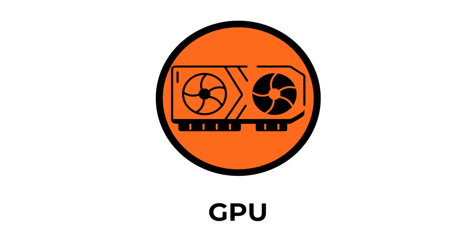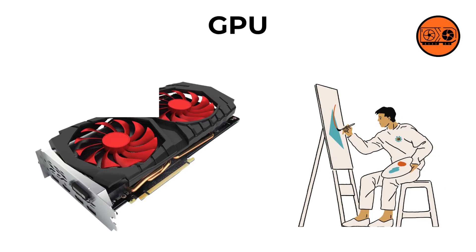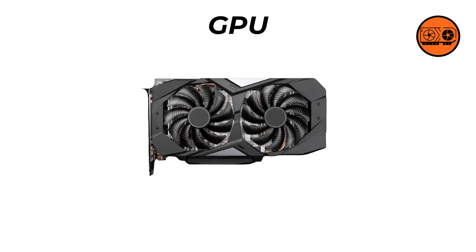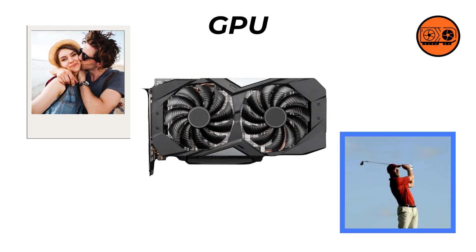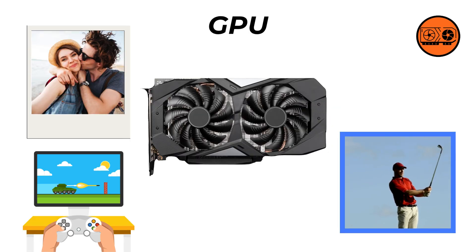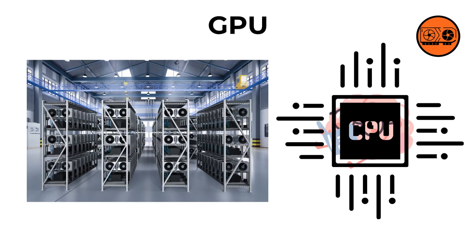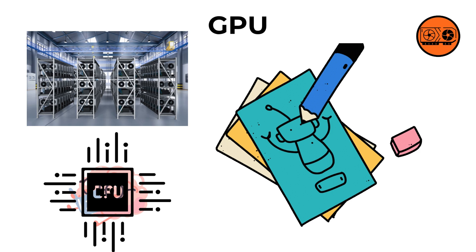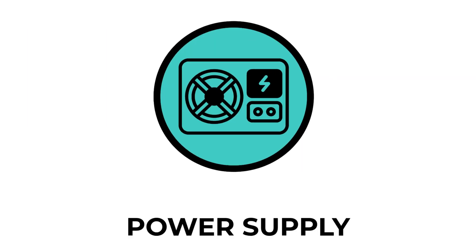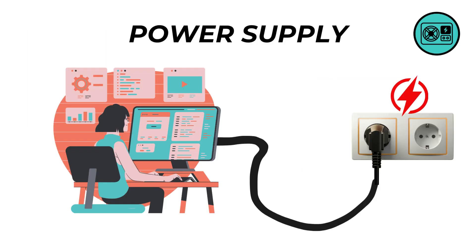The GPU is like the computer's artist. It's specially designed to handle pictures, videos, and especially game graphics, making them look smooth and awesome on your screen. It takes info from the CPU and draws what you see.